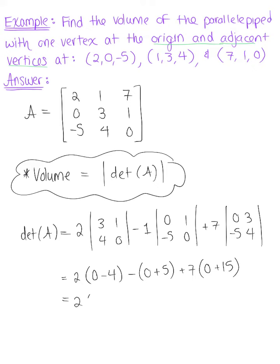So we have 2 times negative 4 minus 5 plus 7 times 15, or negative 8 minus 5 plus 105, for a beautiful final answer of 92.